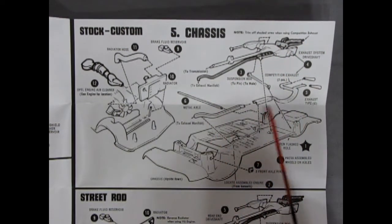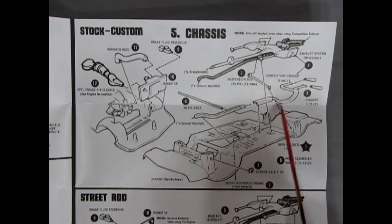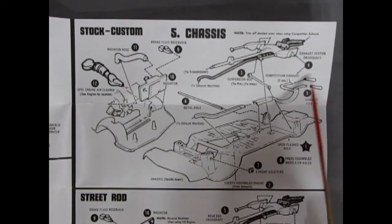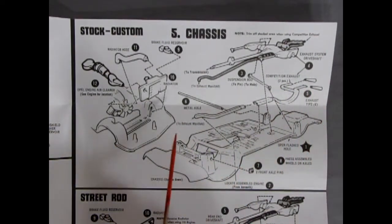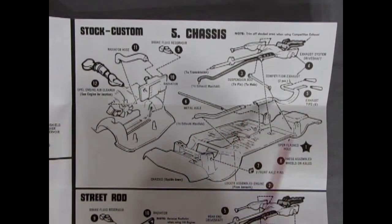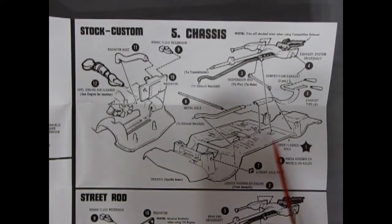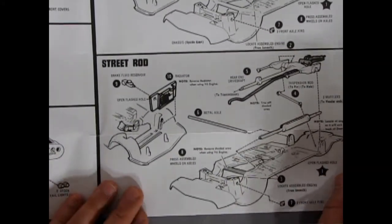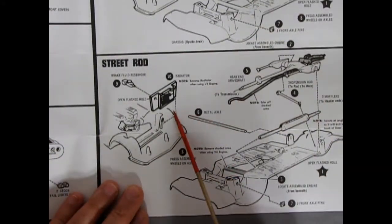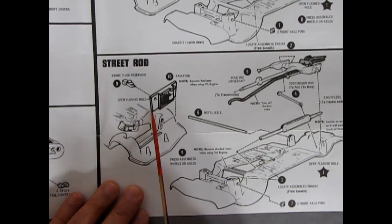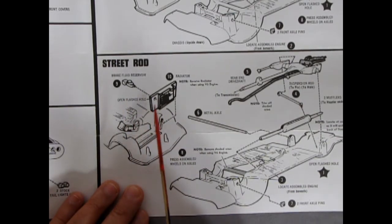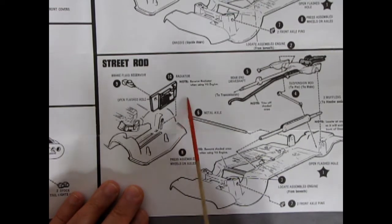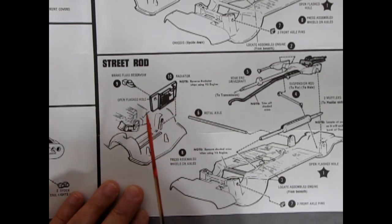Then you've got your rear axle and suspension. Trim off shaded area when using competition exhaust. So that's a stock exhaust. Then they have this competition exhaust. Splits down. Gives you the double pipes from your V6. With of course little trumpets at the back. The metal axle will go through the rear suspension. And then all this drops on top. So you don't see that. You've got front axle pins going in there. Then down here for your street rod. You have the brake fluid reservoir going in through that same hole that was on the radiator.